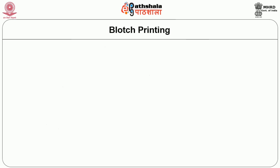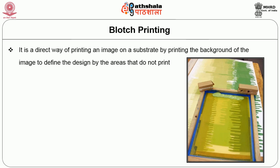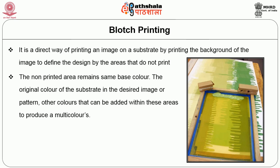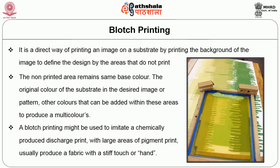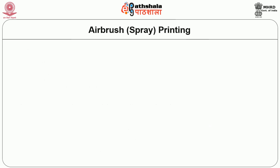Blotch printing is a direct way of printing an image on a substrate, printing the background of the image to define the design by the area that does not print. The non-printed area remains the same base color — the original color of the substrate — while other colors can be added within these areas to produce a multi-color effect. Blotch printing may be used to imitate a chemically produced discharge print; large areas of pigment print usually produce a fabric with a stiff hand.